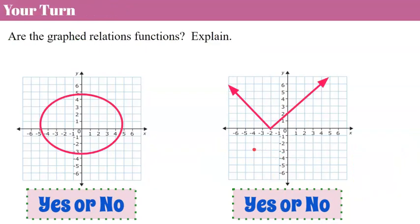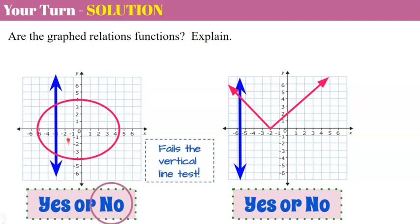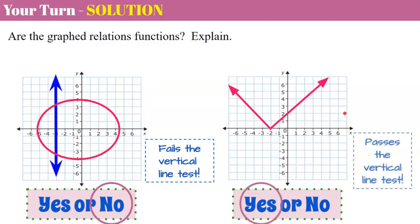Now it's your turn. Use the vertical line test on these two graphs and determine if the relation is a function. Please pause now and come back when you're ready. Welcome back. On the first graph, when I pass a vertical line across, it passes through two points simultaneously — so it fails the vertical line test, and this relation is not a function. Now the second graph is actually the graph of an absolute value. When we do the vertical line test, it only ever passes through one point on the graph at a time. Therefore, yes, this is a function because it passes the vertical line test.